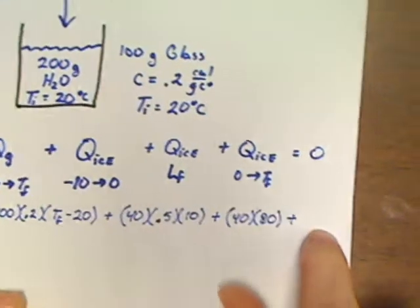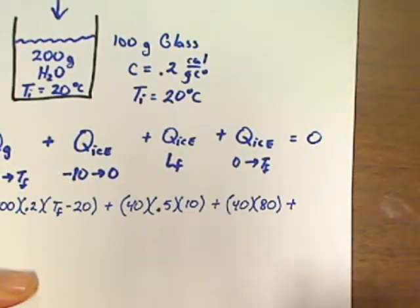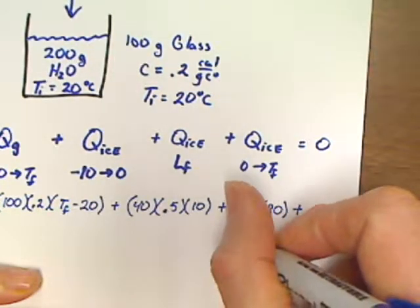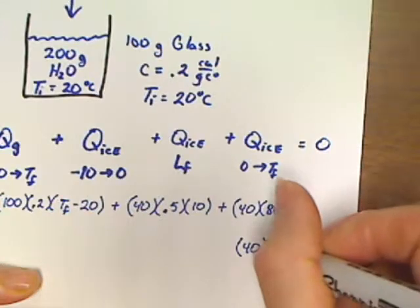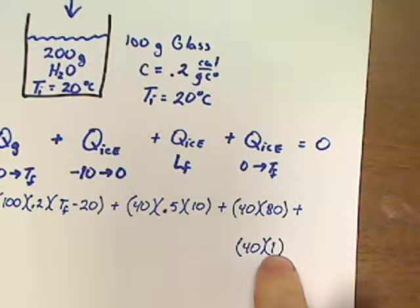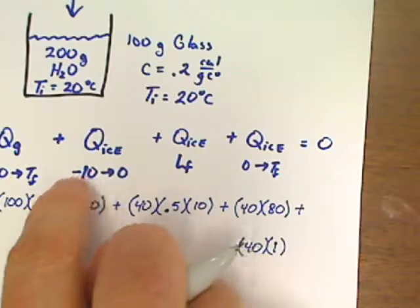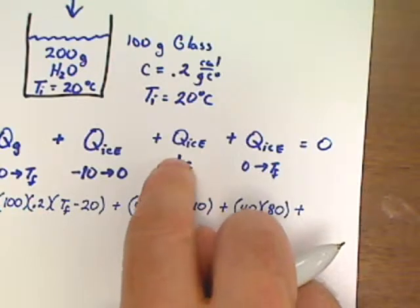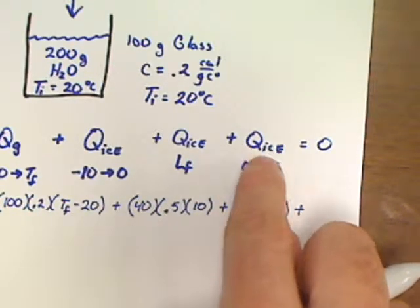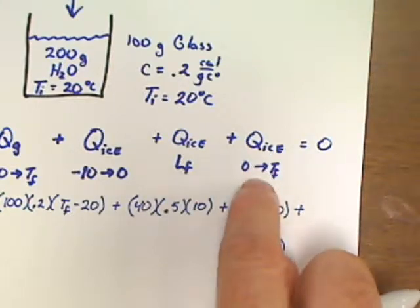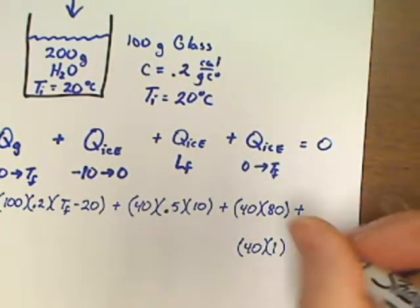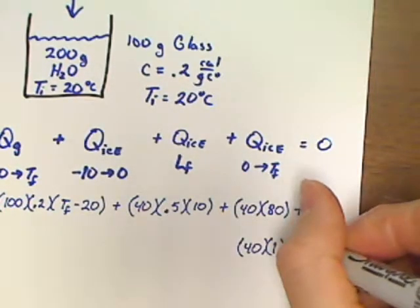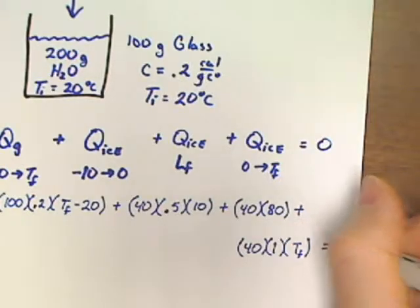Plus one more Q for the ice — and this is where everybody messes up. We used 0.5 earlier because the ice was warming from negative 10 to zero. But now it's been melted, so it's no longer physically ice — it's water. So we use C equals 1: 40 times 1 times (TF minus 0), which is just 40 TF. Everything is set equal to zero.